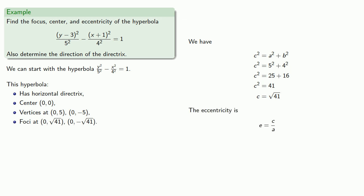Finally, our eccentricity is the ratio of the focal distance to the semi-major axis, and so that's √41 divided by 5.